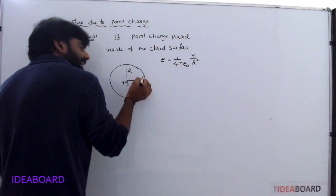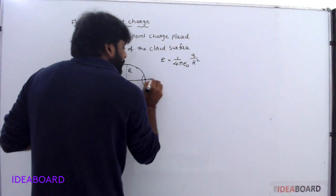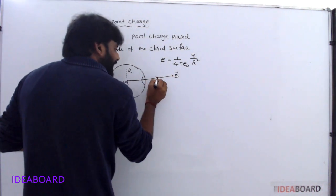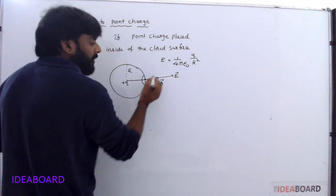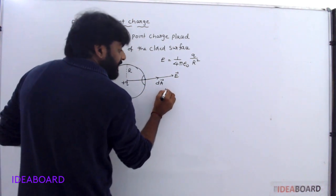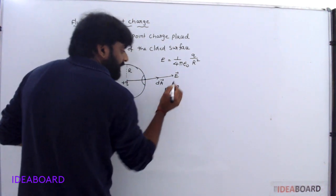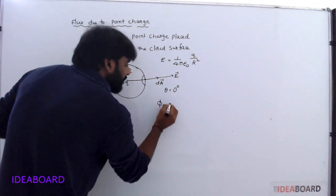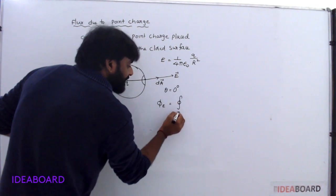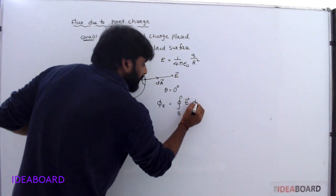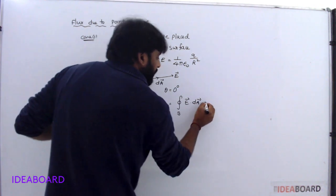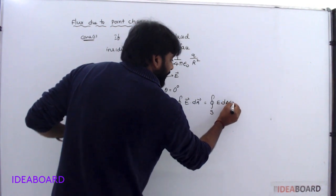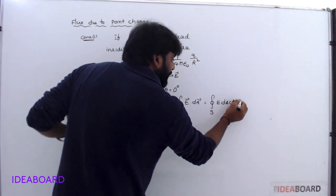The requirement is to find the electric flux. Consider one small area element DA. The electric field direction and the small area direction are both outwards, so both are in the same direction, meaning theta is equal to 0 degrees. The flux definition gives us the closed surface integral of E dot DA, which equals the closed surface integral of E DA cos theta, i.e., cos 0.